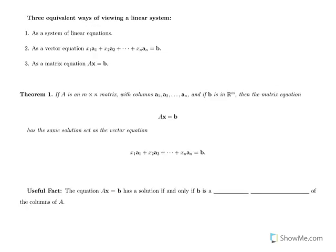Formally, the theorem states: if A is an m by n matrix with columns A1 to An, and B is a vector in Rm, then the matrix equation AX equals B has the same solution set as the vector equation X1·A1 plus X2·A2 plus ... plus Xn·An equals B. We can use whichever form suits our needs. Also, AX equals B has a solution if and only if B is a linear combination of the columns of A.